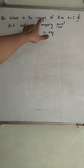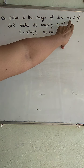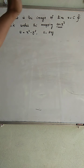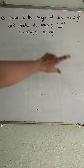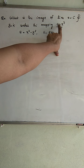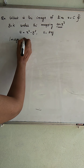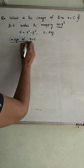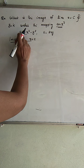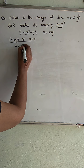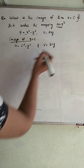First, let us discuss the image of the line X equal to C in the Z plane. The vertical line X equal to C is a line parallel to the Y axis. To find its image under the mapping W equal to Z square, we substitute X equal to C into the expressions for U and V, giving U equal to C square minus Y square and V equal to 2CY.